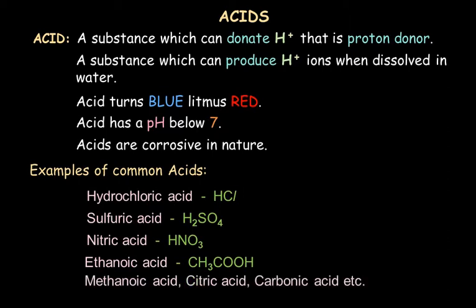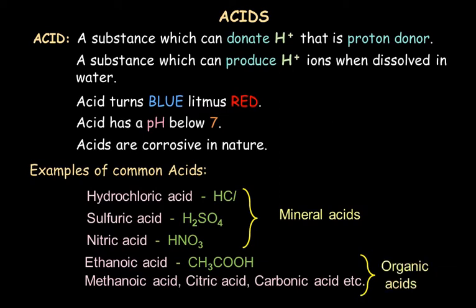Other than that, there are certain more common acids which are methanoic acid, citric acid, carbonic acid, etc. Now out of these, the first three — hydrochloric acid, sulfuric acid, and nitric acid — can be called mineral acids. The other few acids mentioned here are called organic acids. Organic means these are acids or substances related to plants or animal beings, found in their body or produced from plant or organic material.